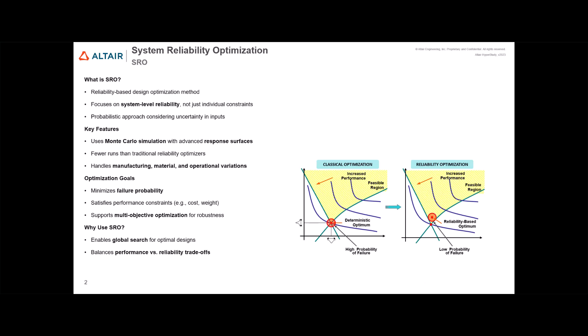Basically, how likely is a system to fail given the uncertainties in the inputs? In the image we can see on our left the classical optimization, which finds the best design without considering uncertainty. The deterministic optimum lies near the edge of the feasible region, resulting in a high probability of failure. On the right we have reliability optimization, which shifts the solution into a safer region by accounting for uncertainty. The new optimum balances performance with low probability of failure, improving the design robustness.